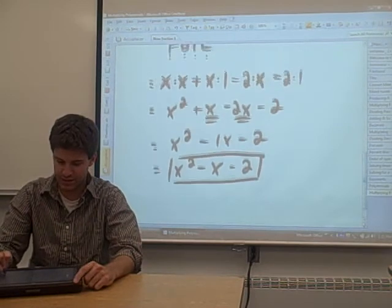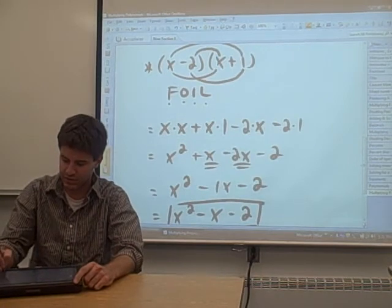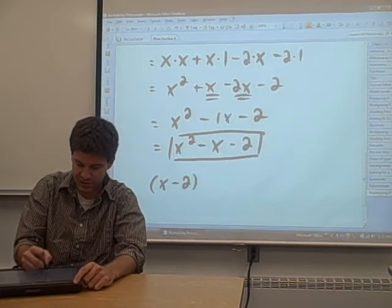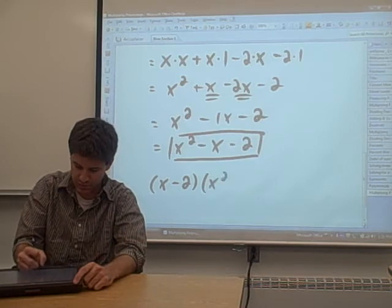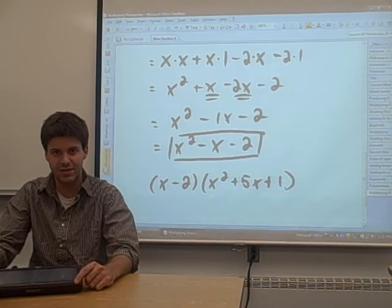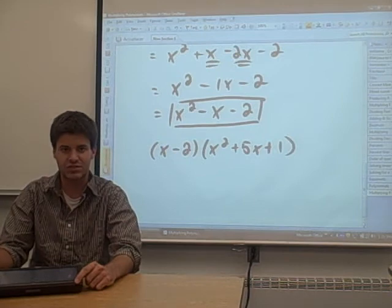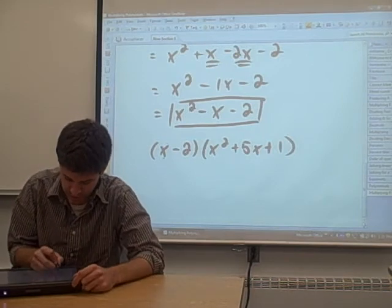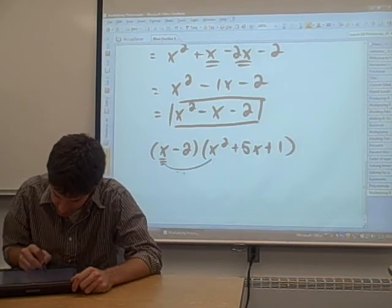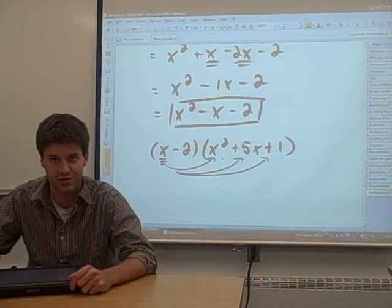Now, the FOIL technique is specific to multiplying two binomials. In general, say for example, if we have a binomial times a trinomial, like that, we can't exactly use the FOIL technique. Really, what the FOIL technique is, is just distributing. What we do to multiply this binomial with this trinomial is we take this x term in the binomial and we distribute it through the parentheses around the trinomial.